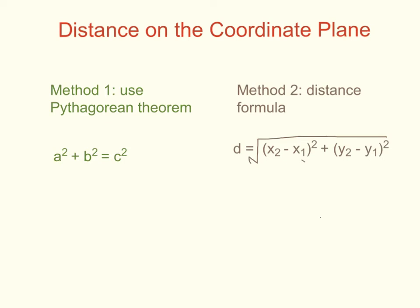In this lesson, we're going to learn about distance on the coordinate plane. There are two methods. The first one is using the Pythagorean theorem, which is a squared plus b squared equals c squared. The second one is using the distance formula, which is the square root of (x2 minus x1) squared plus (y2 minus y1) squared. Both of these will get you to the correct answer, but you need to know how to do both.